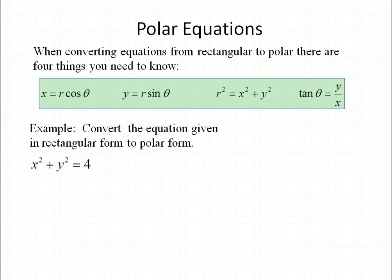Let's start with x squared plus y squared equals 4. We know that x squared plus y squared equals r squared, so we're going to use that substitution. Then we isolate r by taking the square root. We're not going to include the negative 2 because it doesn't make sense for a radius length to equal negative 2, so we just use the positive square root.